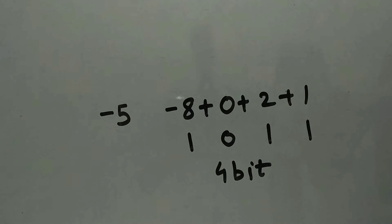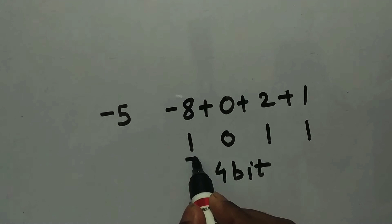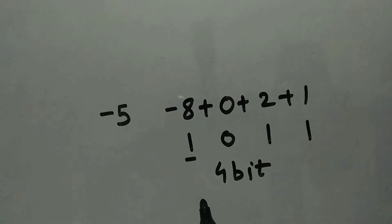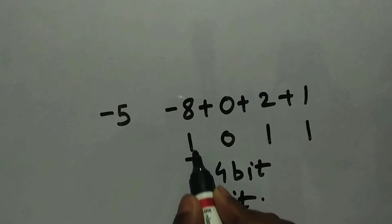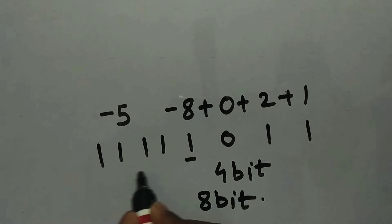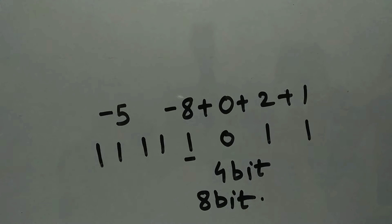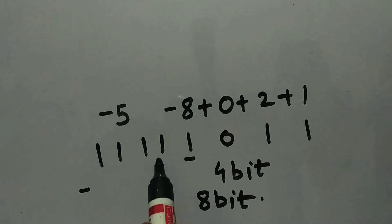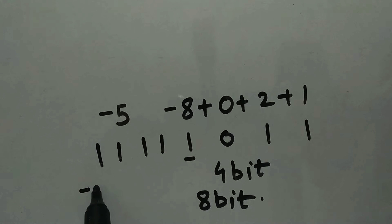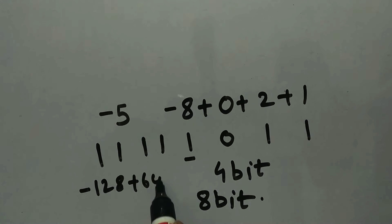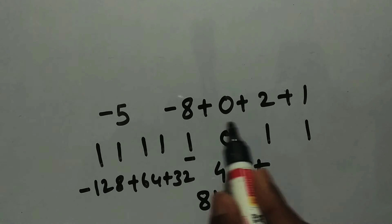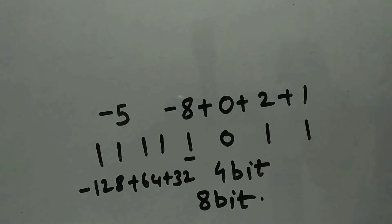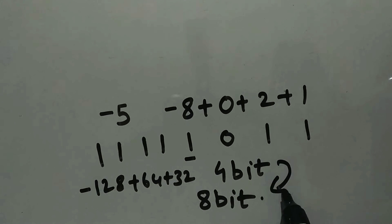If you want to write this exact same number in 8 bits, you do sign bit extension. This is the sign bit, so I'll be extending it — as the name suggests. I want 8 bits, so for the extra 4 bits I'll repeat the sign bit: 1, 1, 1, 1. The value is exactly the same — minus 5. You can verify: minus 128 plus 64 plus 32 plus 8 plus 2 plus 1 equals minus 5. All you need to do is extend the sign bit from 4 to 8.